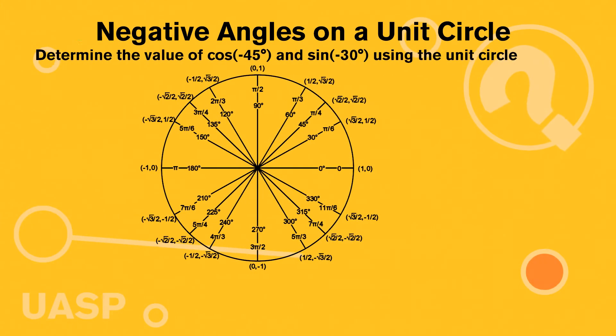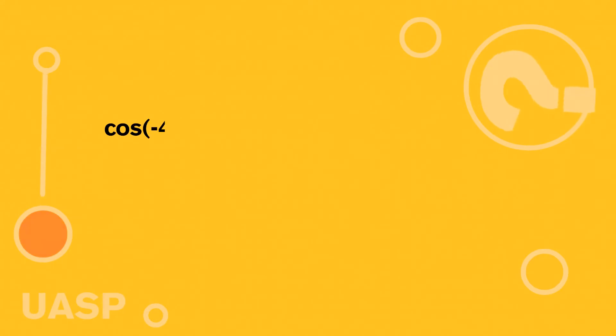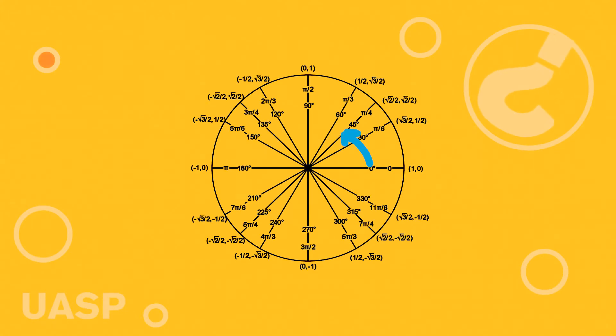The first route is, let's talk about first how we solve a regular positive angle. So we have cosine of negative 45 degrees. Now let's first figure out how do we find the cosine of 45 degrees. We know that since it's talking about cosine we take the x value of the coordinate.